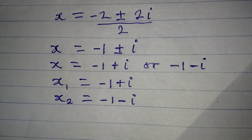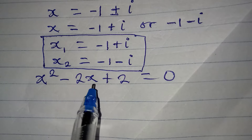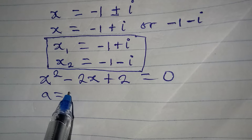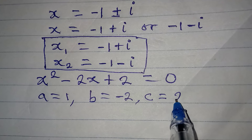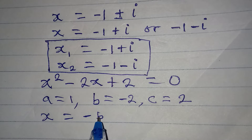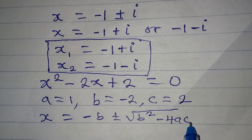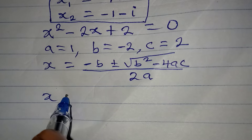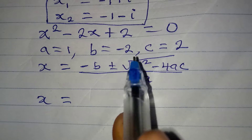Now let's pick our second quadratic equation for x3 and x4. From this second factor, we again have two solutions. Using the same quadratic formula: a equals 1, b equals minus 2, and c equals 2. The formula is x equals minus b plus or minus the square root of b squared minus 4ac, all over 2a.